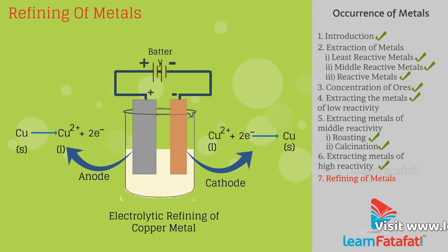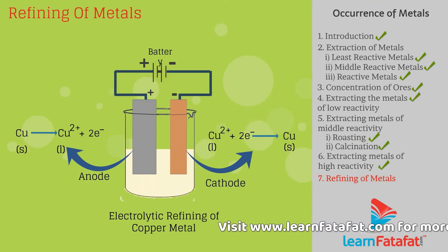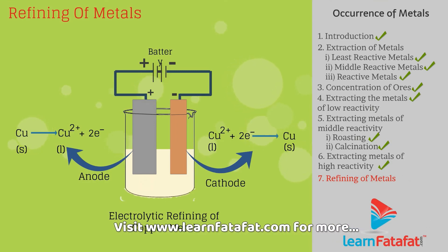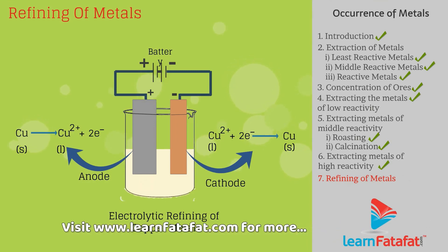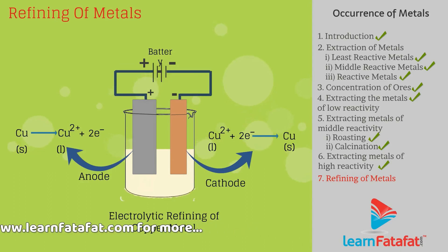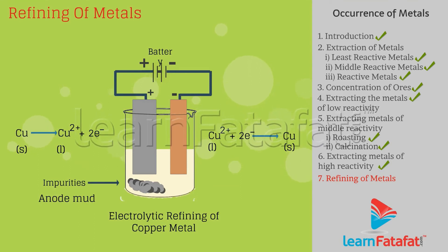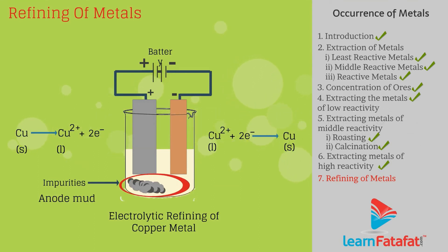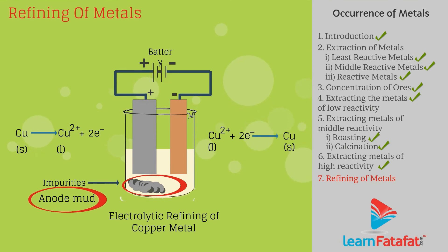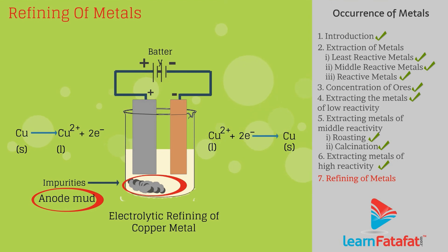That is, at the anode: Cu → Cu²⁺ + 2e⁻. At the cathode: Cu²⁺ + 2e⁻ → Cu. The impurities get dissolved into the solution or settle down at the bottom of the anode. The impurities collected at the bottom of the anode are called anode mud.